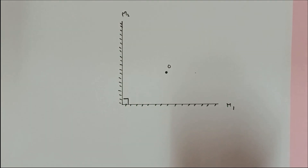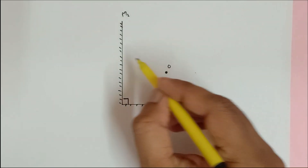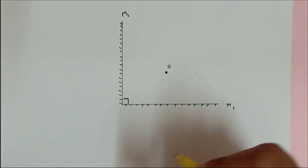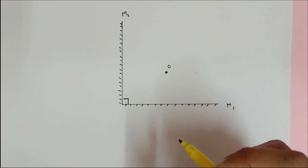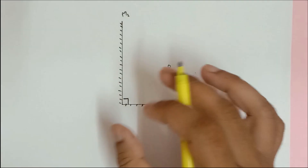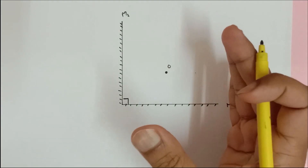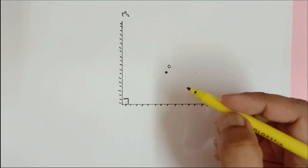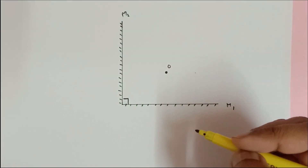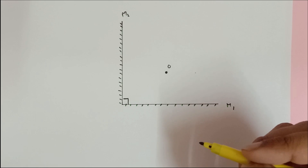Now we need to find out how many images are possible. In the later part of the video I am going to show you the actual ray diagrams.